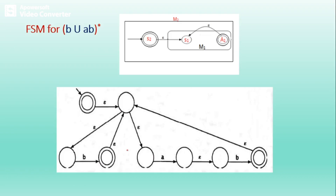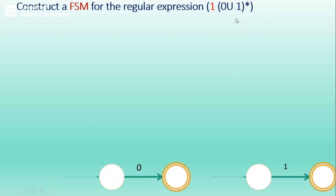This is a simple example of building FSM from a regular expression. Now we will consider another example: construct FSM for the regular expression 1(0 union 1) whole star. First, identify the alphabets of the regular expression and construct FSM for each. The alphabets here are 0 and 1.